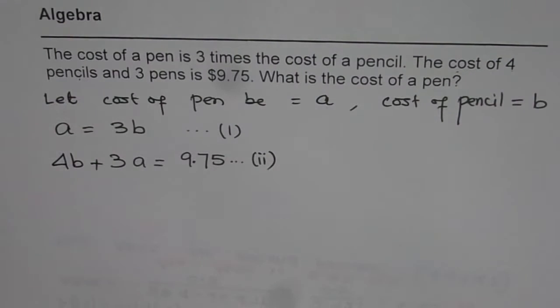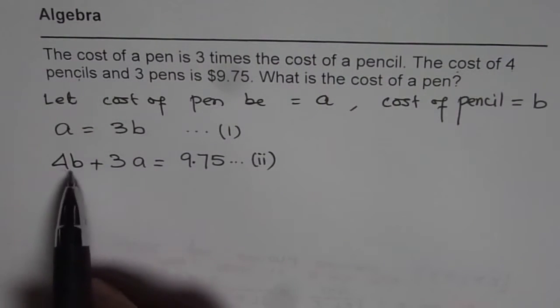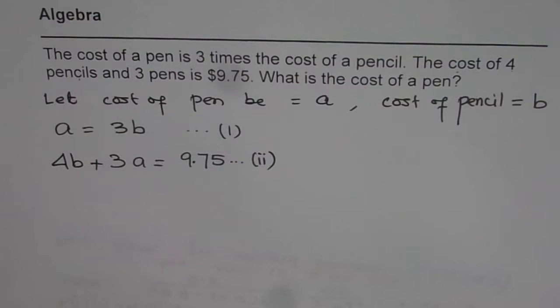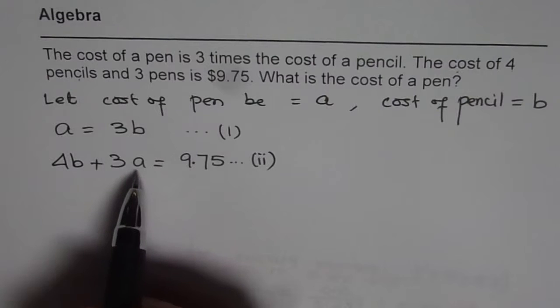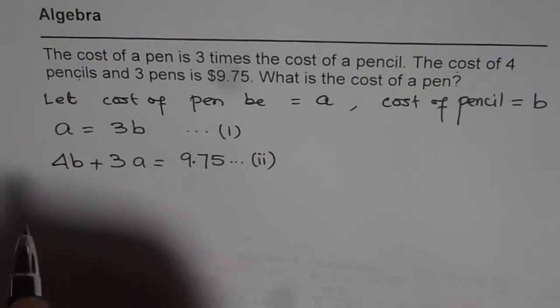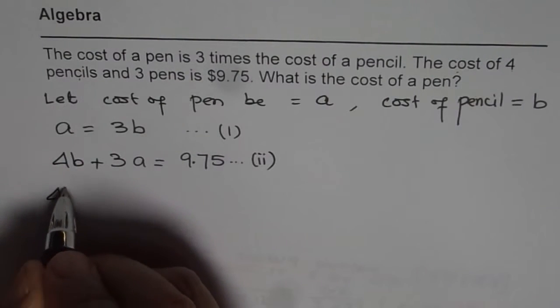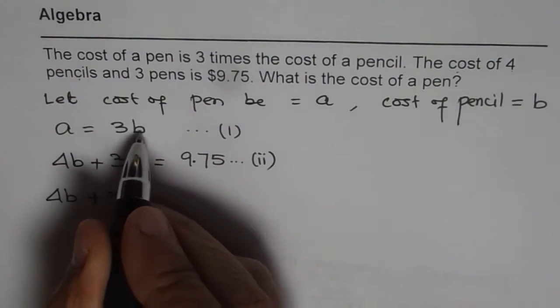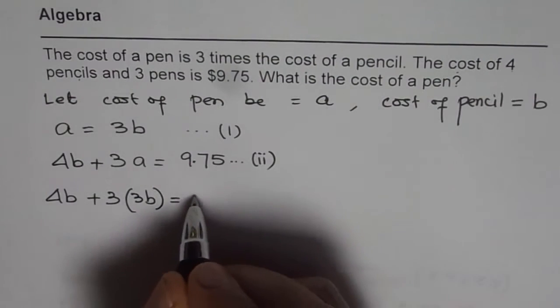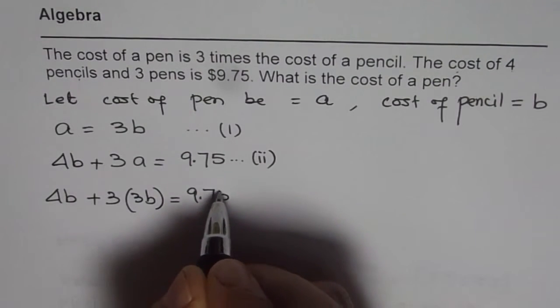Now once we have two equations, then we can always find two variables. So here we know A is 3B. So I can replace this A with 3B. So what do I get? I get 4B plus three times, instead of A I am writing 3B. That should be equals to 9.75.